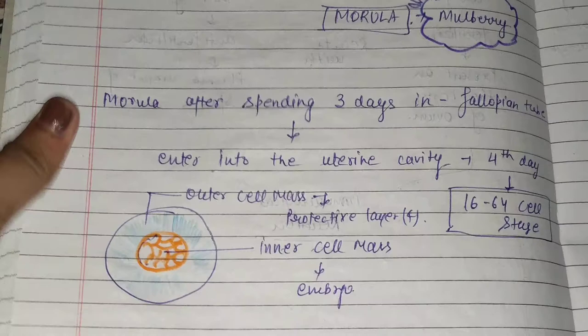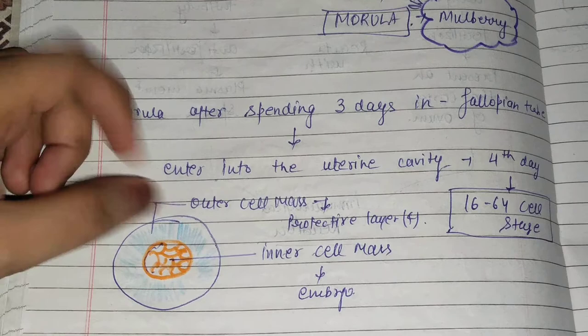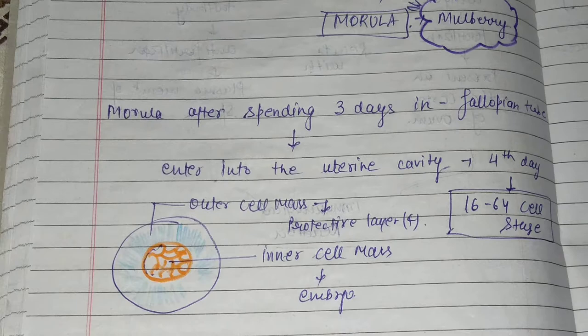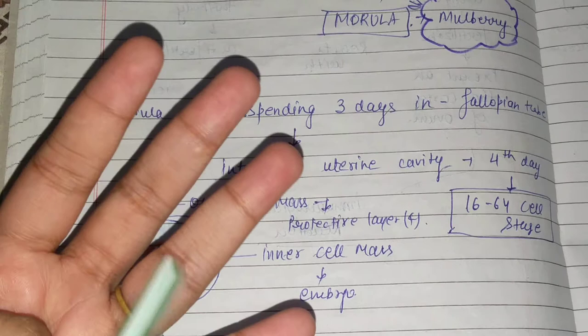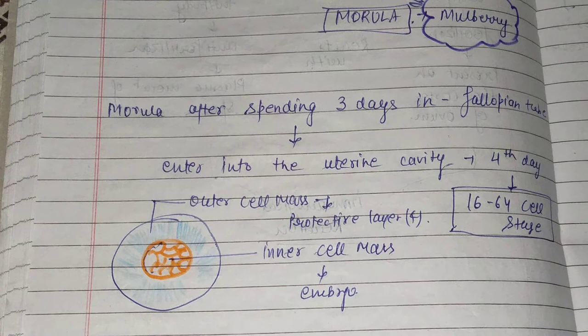At this stage you will see an outer cell mass and an inner cell mass. The inner cell mass is called the embryo. The outer cell mass forms the protective layers, which are four in total: Amnion, Chorion, Yolk sac, and Allantois.